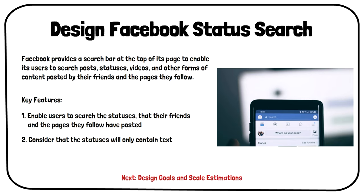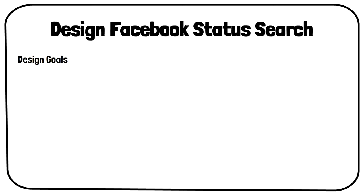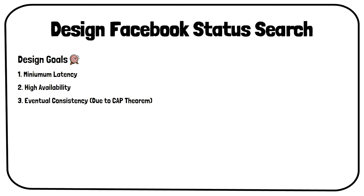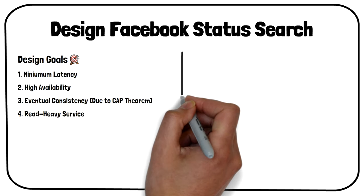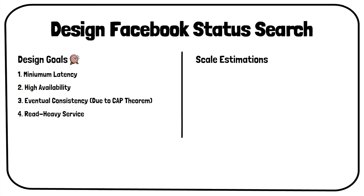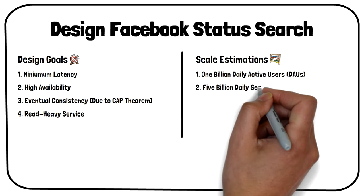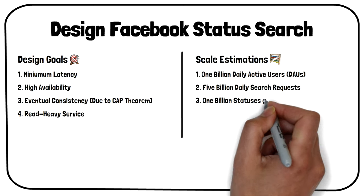Next, let us review the design goals and scale estimations of this system. As we did while designing Facebook Newsfeed, we should ensure that the final system has minimum latency, and users should not experience any significant lag while searching for the statuses. The system should be highly available. Due to the CAP theorem, we will aim for an eventually consistent system. Our system will be read-heavy in nature, as more users will be searching on Facebook rather than posting statuses. Thus, the number of read requests will be far greater than write requests. On average, the system will have 1 billion daily active users and will receive around 5 billion search requests daily. Also, about 1 billion statuses will be generated by the users per day.